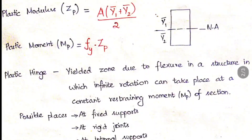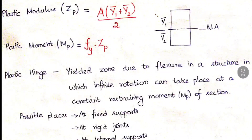First, let us see about the plastic modulus. We know the elastic section modulus ZE that we have already studied. Similarly, the plastic modulus ZP equals A times (Y1 plus Y2) divided by 2, or you can write it as ΣAY — whatever the parts above and below the neutral axis you have to calculate. For a rectangle, the neutral axis will be at its center line, that is at D/2.